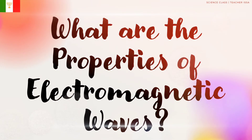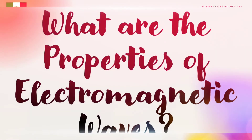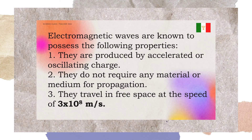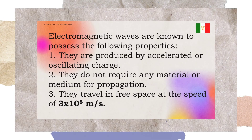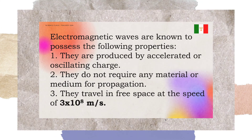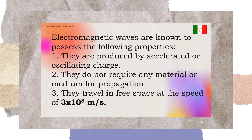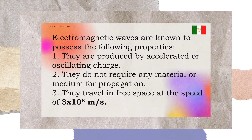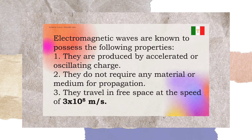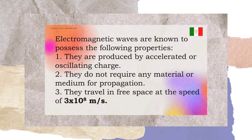So what are the properties of electromagnetic waves? Electromagnetic waves possess the following properties: Number one, they are produced by accelerated or oscillating charge. Number two, they do not require any material or medium for propagation. And number three, they travel in free space at the speed of 3 × 10⁸ meters per second.